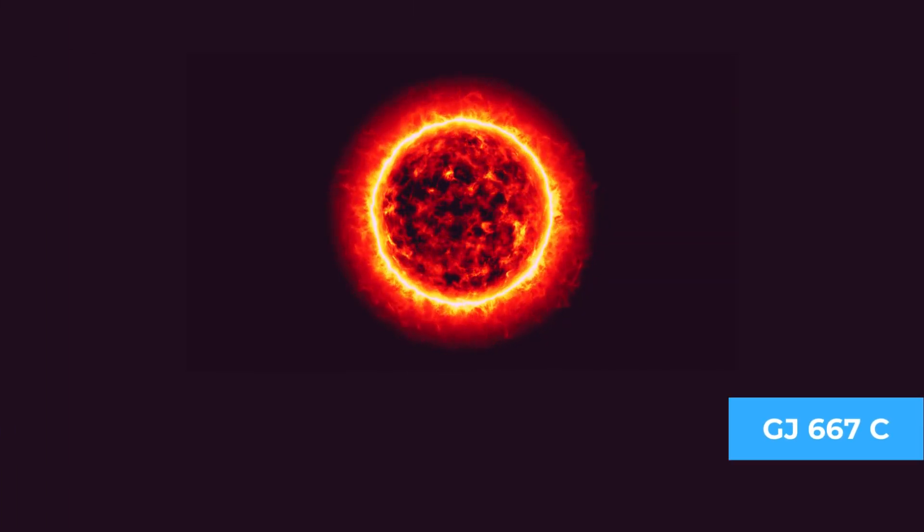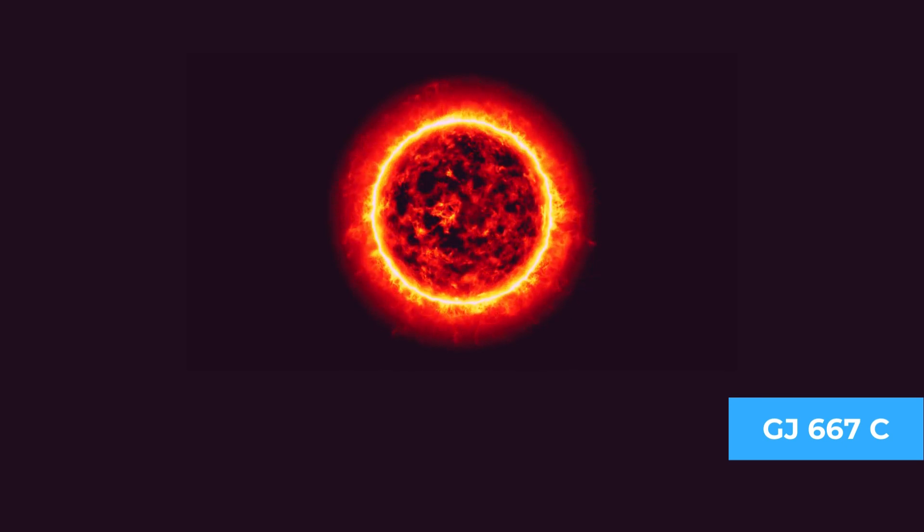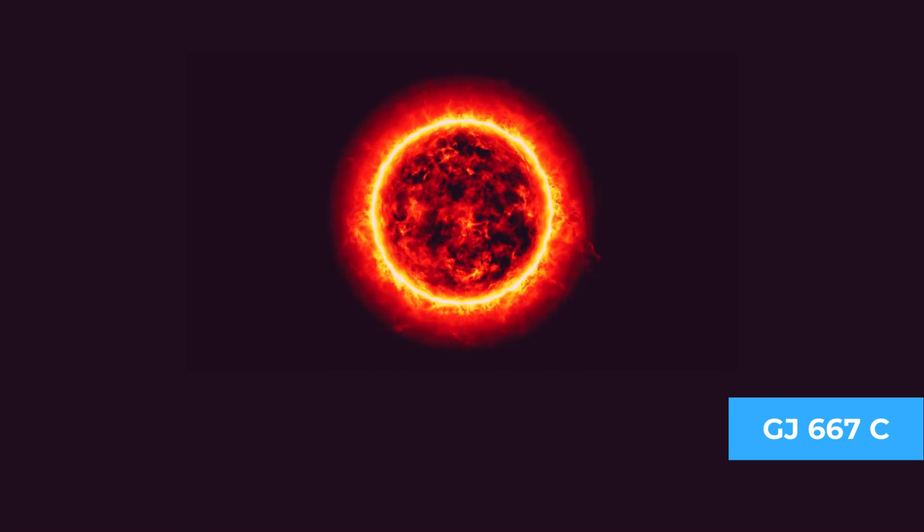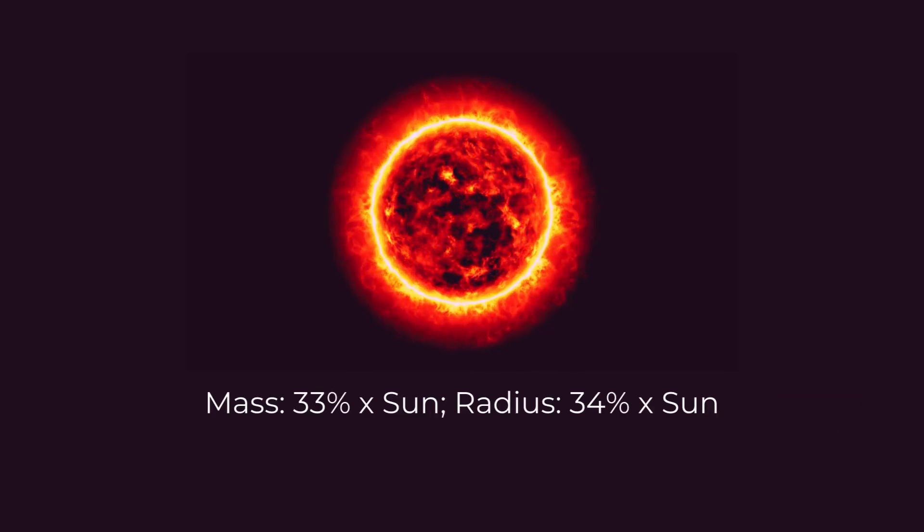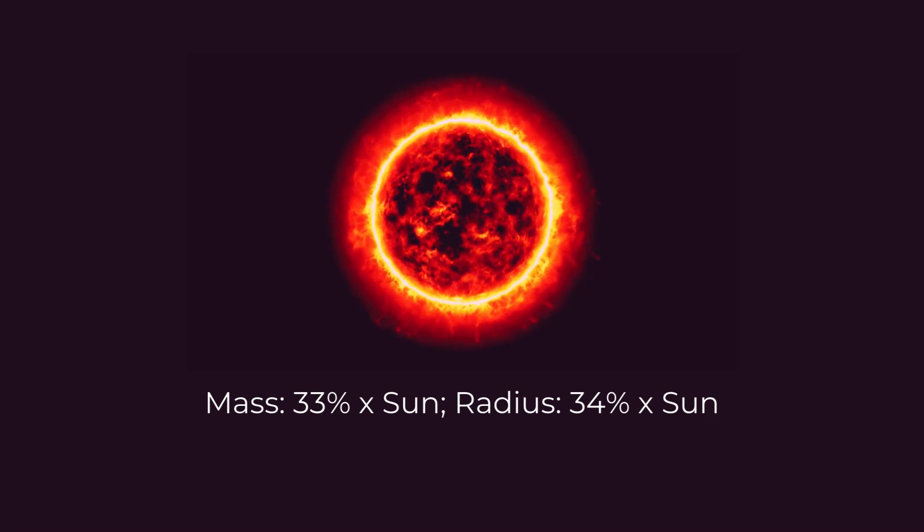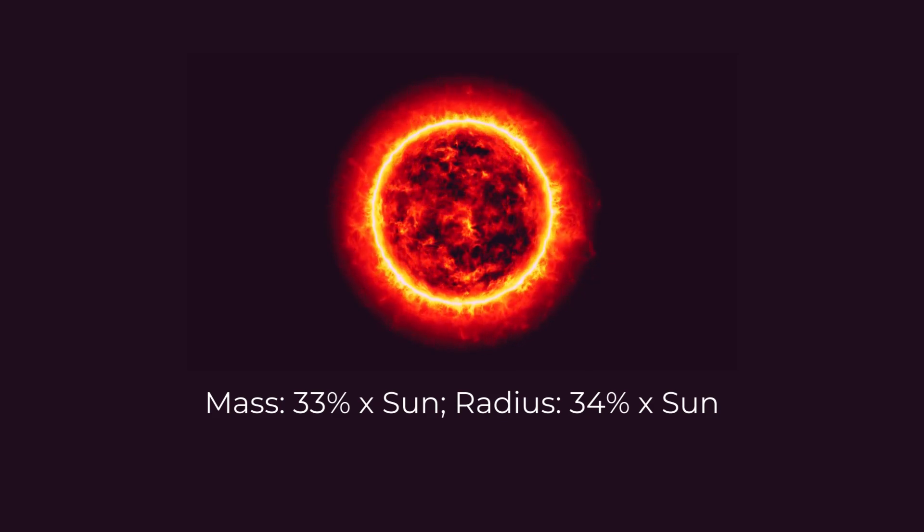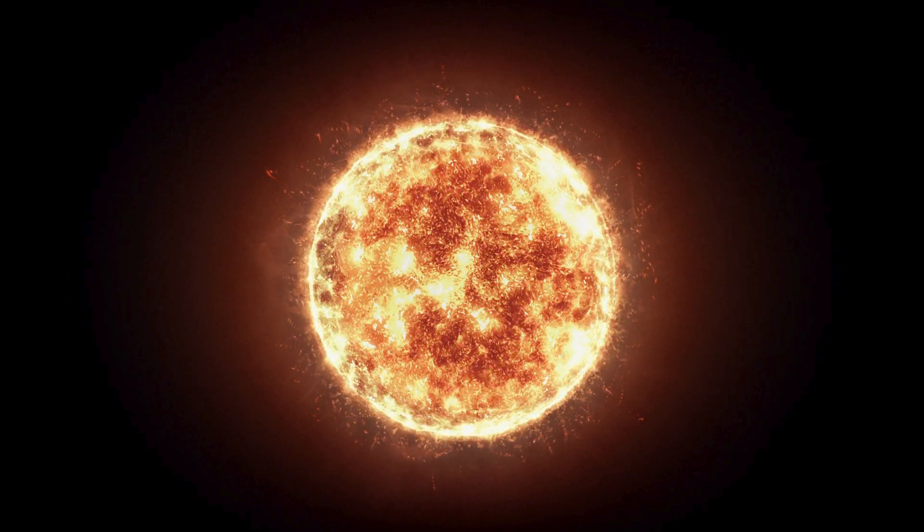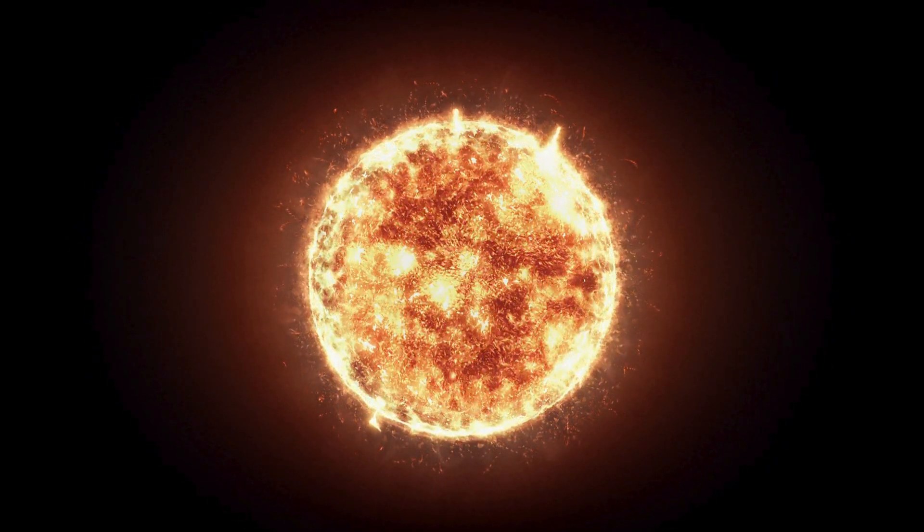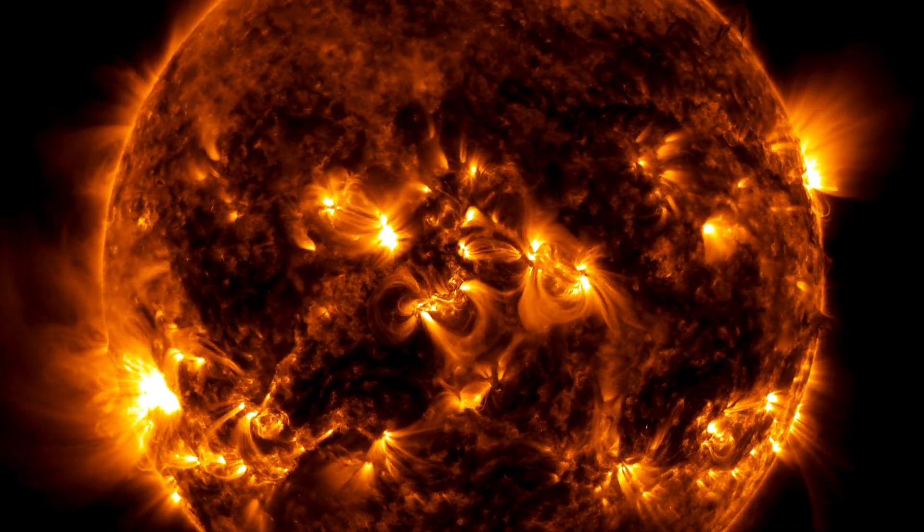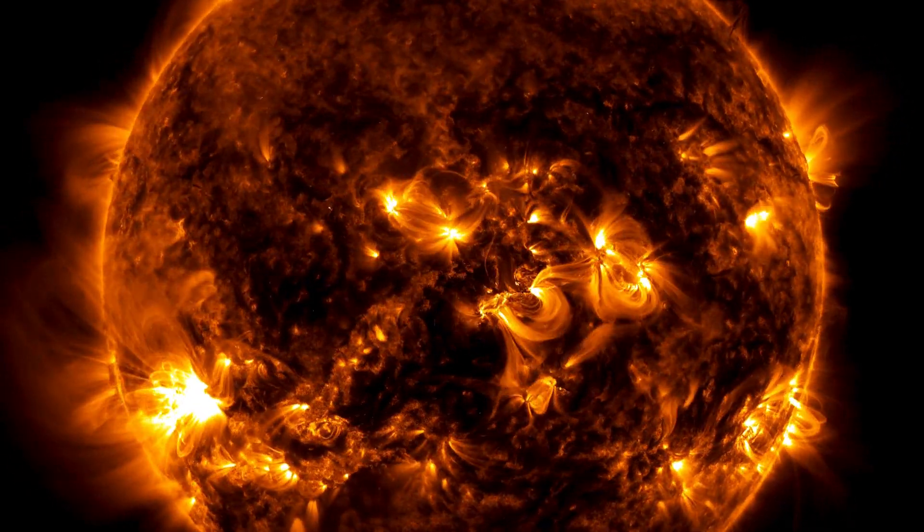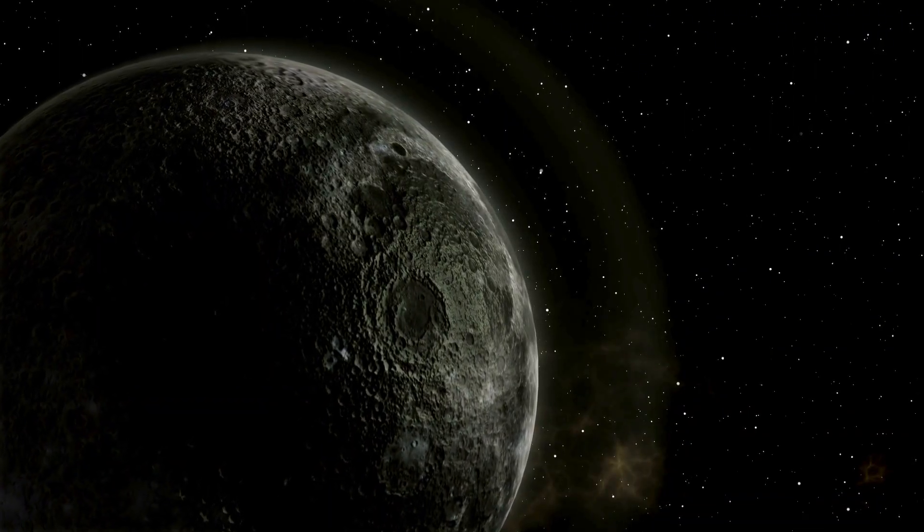As in the case of Alpha Centauri, the third star steals the spotlight. Enter GJ 667C, an M-type red dwarf boasting a mass and radius merely a third of the Sun's: mass 33% times Sun, radius 34% times Sun. Despite its faint luminosity (1.4% times Sun) and relatively cold surface temperature of 3,775 Kelvin, compared to the Sun's 5,772 Kelvin, GJ 667C hosts a surprisingly diverse planetary system.